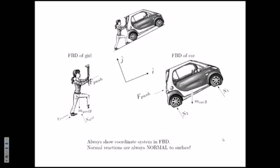Now let's look at the free body diagram of the car. The forces acting on the car are: the push force from the girl, the weight of the car, and normal reactions from the ground on the wheels. Since the car is not being driven by the engine, the wheels are free-rolling, so we neglect friction on the wheels. There are two normal reactions — if N2 is the reaction force on the two rear wheels, this will be written as 2N2.